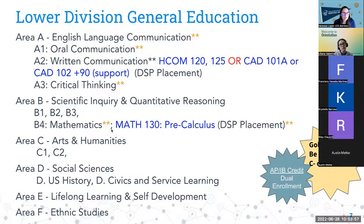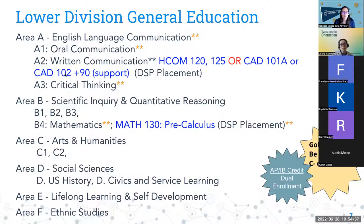I want to highlight two specific areas. For A2 written communication, the class you take depends on your DSP — Directed Self Placement — results. Many of you should have received an email about logging into the Canvas DSP page. If you haven't completed the directed self placement on Canvas, please do so this week or on the weekend, as it will tell you which writing class to register for — either HCOM 120, 125, or for some of you, CAD 101A or CAD 102.